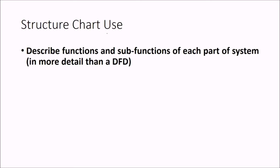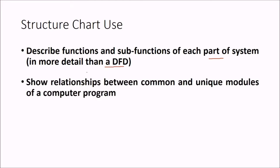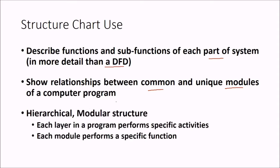The structure chart describes functions and sub-functions of each part of a system in more detail than data flow diagrams. It also shows the relationship between the common and unique modules of a computer program or software. This is in hierarchical form — each layer in a program performs certain specific activities and each module performs specific functions.